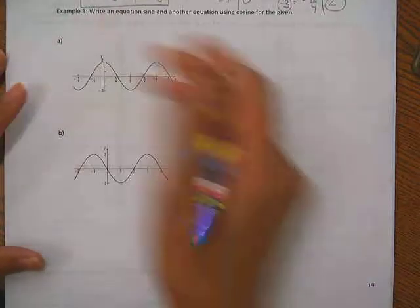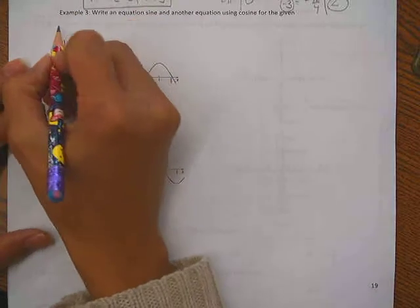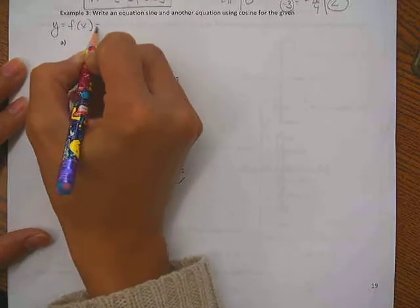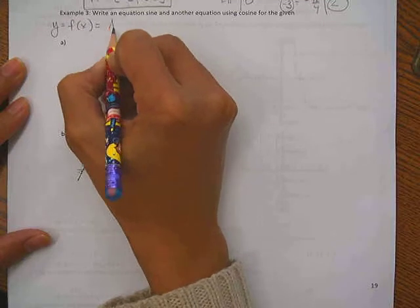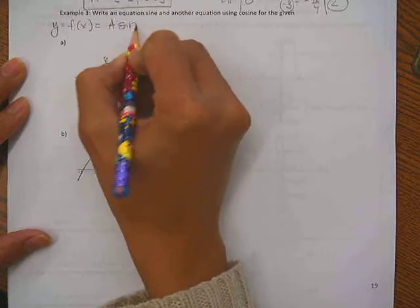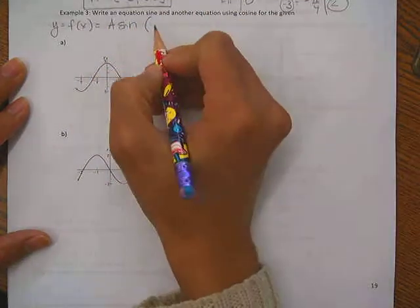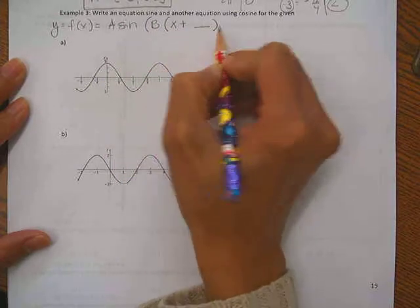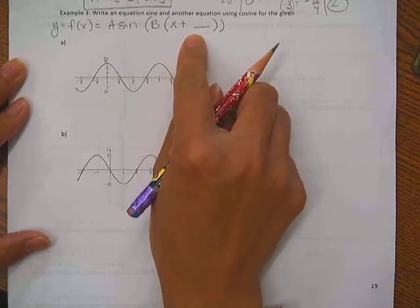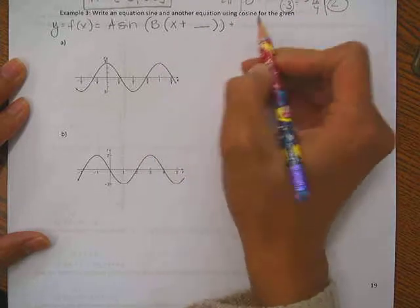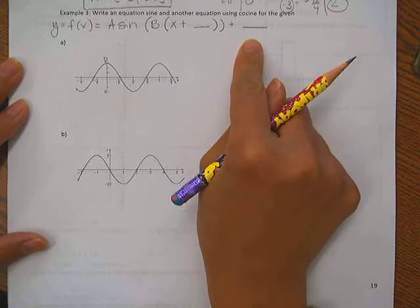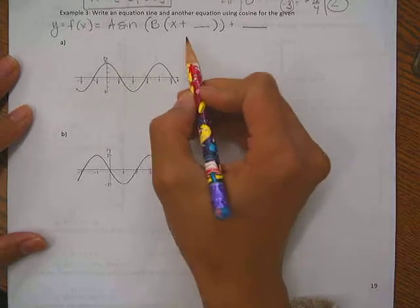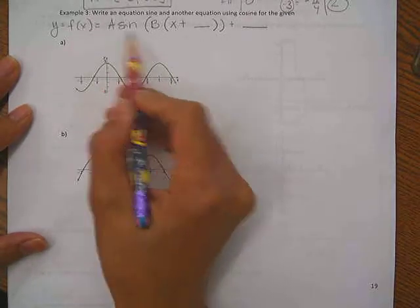So for our generic function, it's always going to be y equals, or you can use f(x) equals, a value in the front times sine, open parentheses, b value, x, plus a shift, so that's a horizontal shift of some sort, plus another blank, and there could be a vertical shift if there's an up or down movement. So let's talk about what a is and what b is.